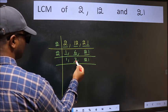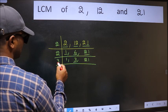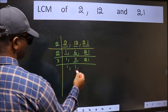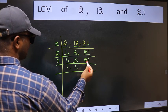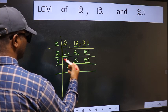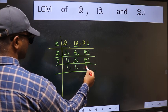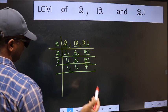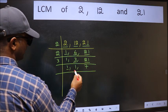Now here we have 3. 3 is a prime number. So 3, 1 is 3. The other number 21. When do we get 21 in 3 table? 3, 7 is 21. Now we got 1 here and here.